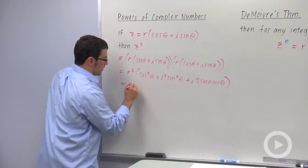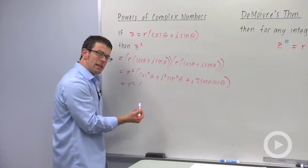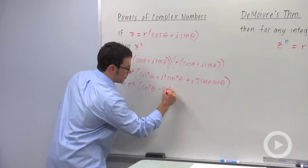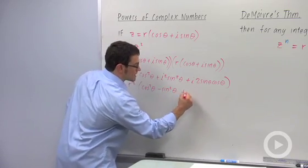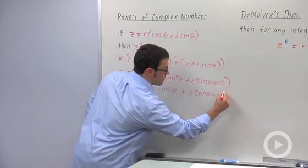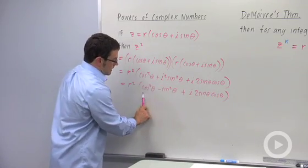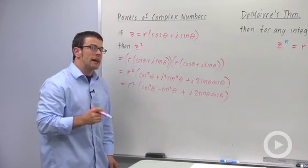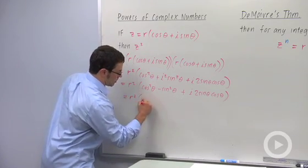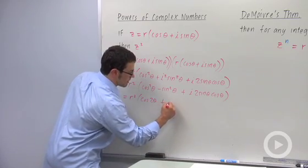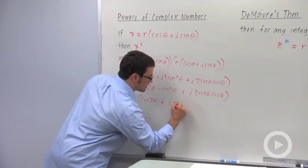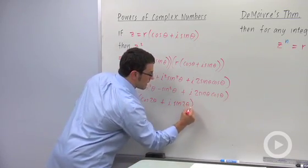This is going to give me r squared cosine squared and then i squared is negative one. So this will be minus sine squared plus i times two sine theta cosine theta. Now you may recognize that this cosine squared minus sine squared is exactly cosine two theta. Cosine two theta plus and two sine theta cosine theta is sine two theta. These are the double angle identities for sine and cosine.